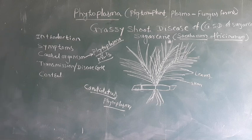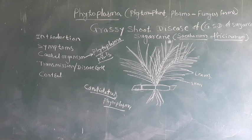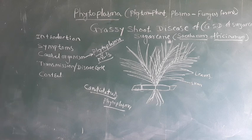The causal organism is phytoplasma, formerly known as MLB (mycoplasma-like bodies), now called Candidatus phytoplasma. These organisms are associated in the sieve cells, which are present in the phloem. There are two types of phytoplasma: spherical and filamentous bodies. The spherical bodies are 300 to 400 nanometers in diameter and filamentous bodies are 50 to 530 nm in diameter.